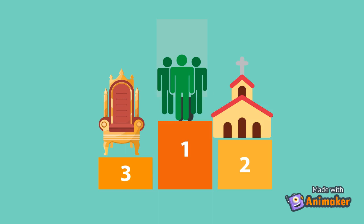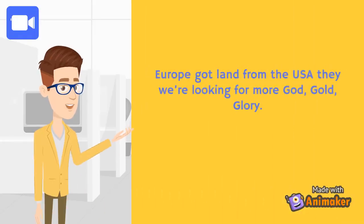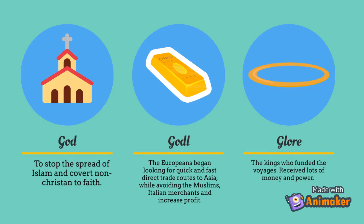They also did this because exploration would bring them three things: God, Gold, and Glory. Because of this, the Europeans became very wealthy. God was to stop the spread of Islam and convert non-Christians to faith. Gold was the Europeans beginning to look for quick and direct routes to Asia while avoiding Muslim-Italian merchants. To increase profit and glory, the kings who funded the voyages received lots of money and power. This is why Europe got land from the Americas — they were looking for more money.